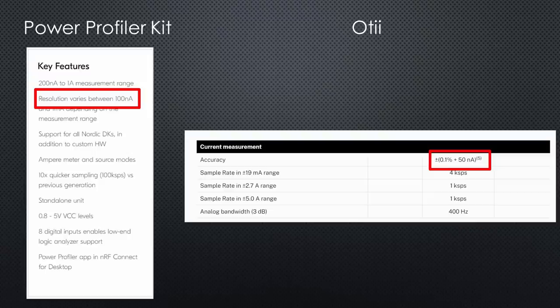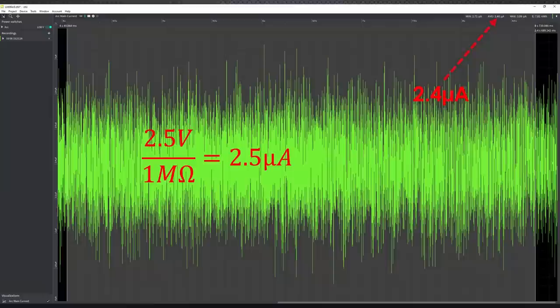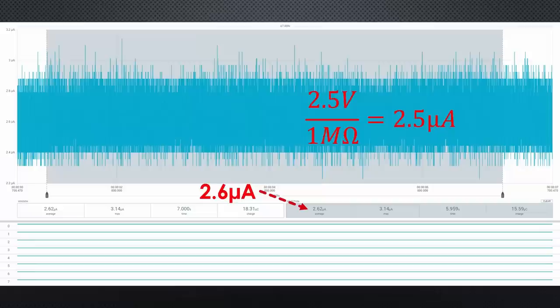One last question. What about measuring low currents? All devices mentioned that they are able to measure nano amperes. It is not easy at all to measure such small currents, and I doubt that a lot of people need this feature. I connect a 1 megaohm resistor to the OT as well as to the power profiler. You see that the values are not very stable and that we see a lot of noise. At 2.5 volts, we would expect 2.5 microamperes. The OT shows an average of 2.4 and the profiler 2.6 microamperes. For me, both values are good enough.